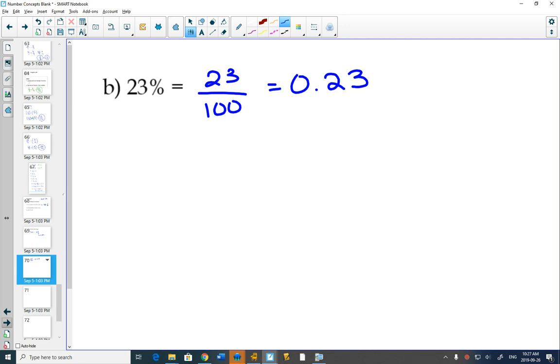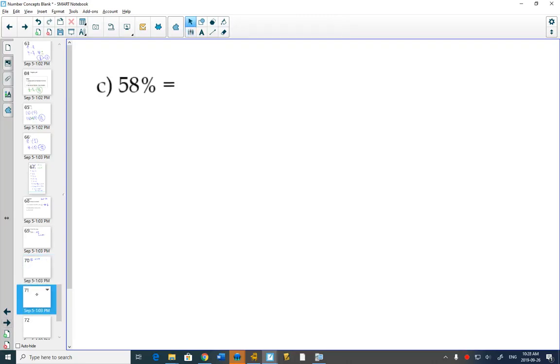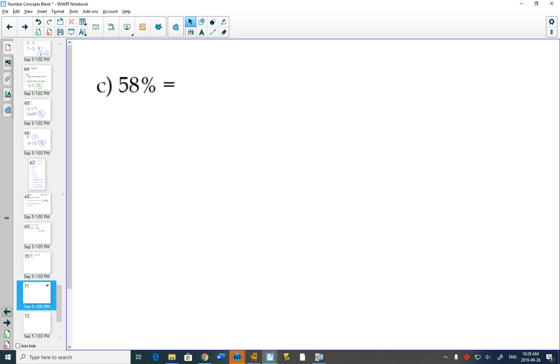When we say decimals, I don't know who invented this in the English language, but when you say a decimal, you always say just each number individually. So you never say decimal 23, you always say decimal 23. 58%, 58 out of 100 as a decimal, 0.58.